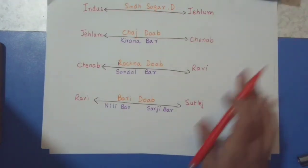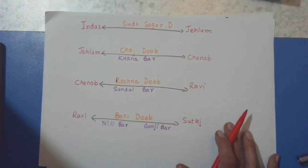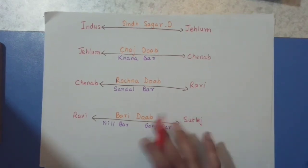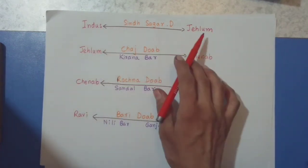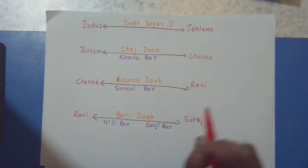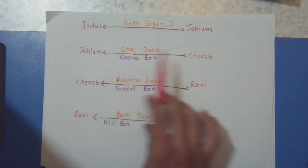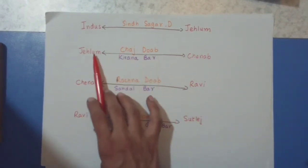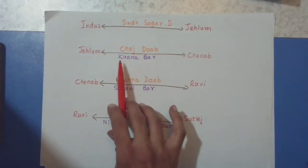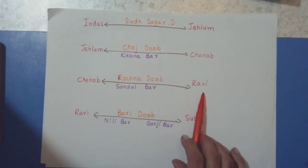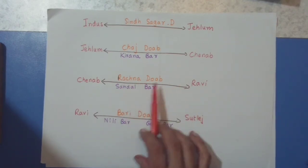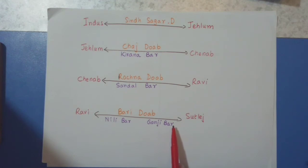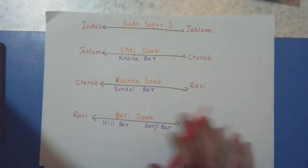These are names you have to learn really well — make it on a piece of paper, it will be very helpful especially during exams. River Indus and River Jehlam: the area between them is the Sindh Sagar Doab. Jehlam and Chenab: the area between them is the Chaj Doab, and the Kirana Bar is located there. Chenab and Ravi: the area is the Rachna Doab, and the Sandal Bar is located there. Ravi and Satlaj: it is the Bari Doab, and two bars are situated on it — the Nili Bar and the Ganji Bar. See how simple it becomes when you organize it this way.